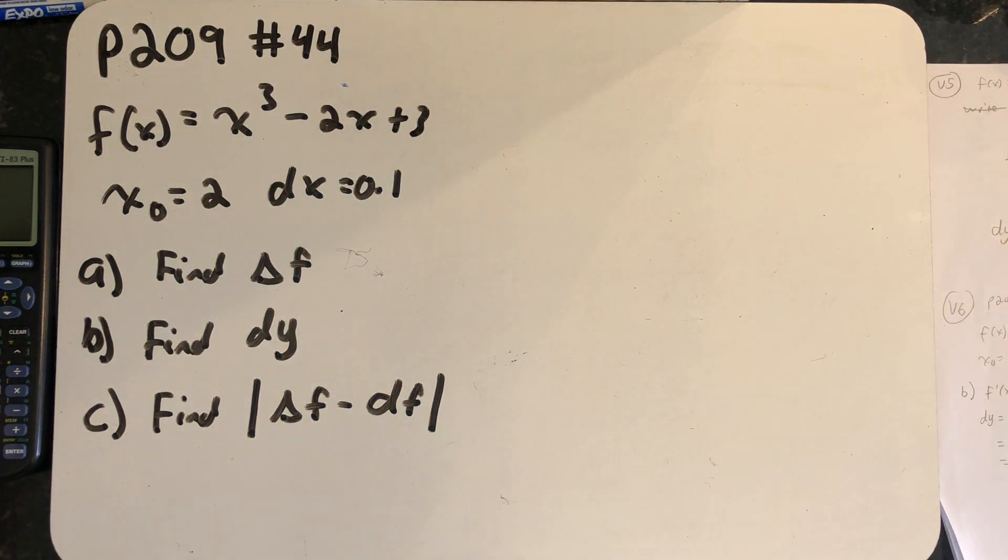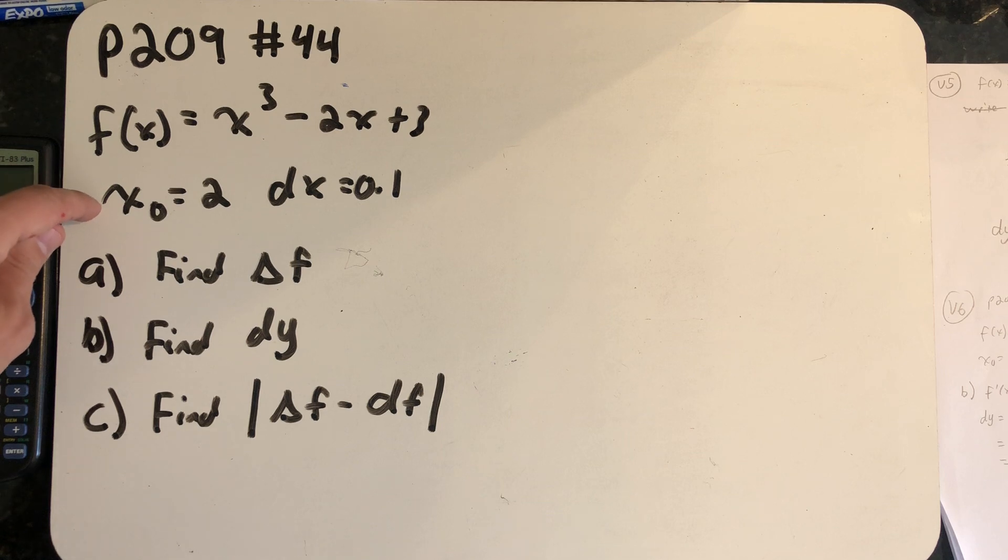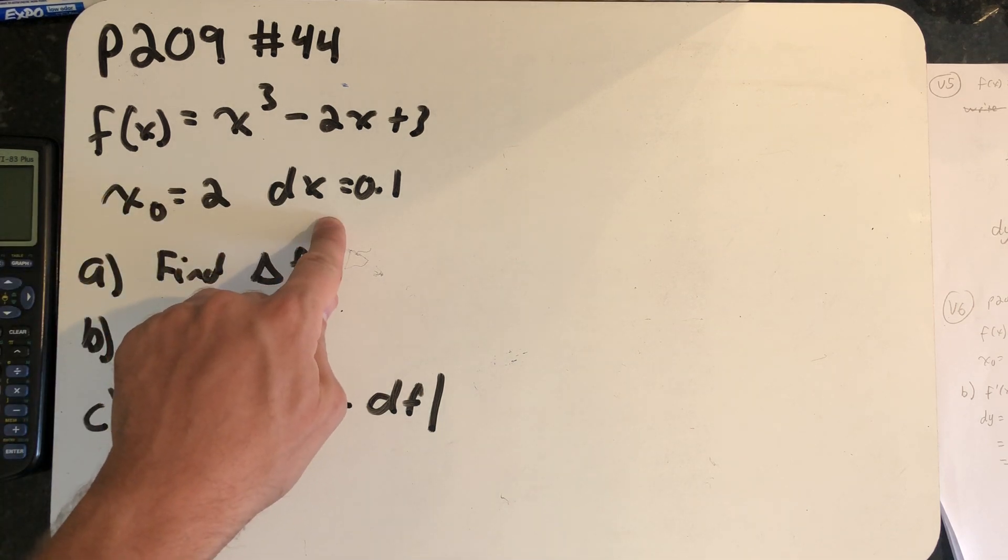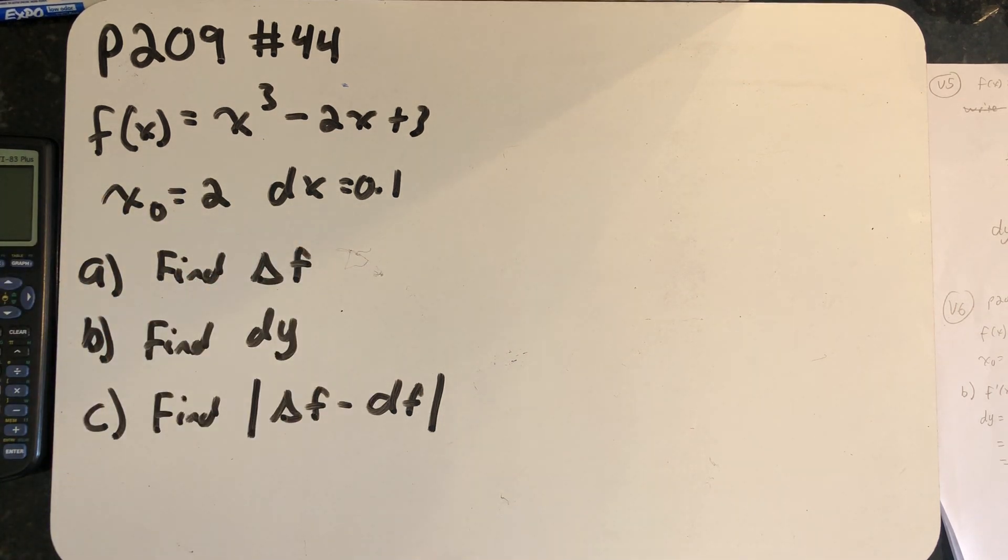In problem number 44, our function is f(x) = x³ - 2x + 3. We're starting at x₀ = 2, and the increment on the x-axis dx is 0.1.